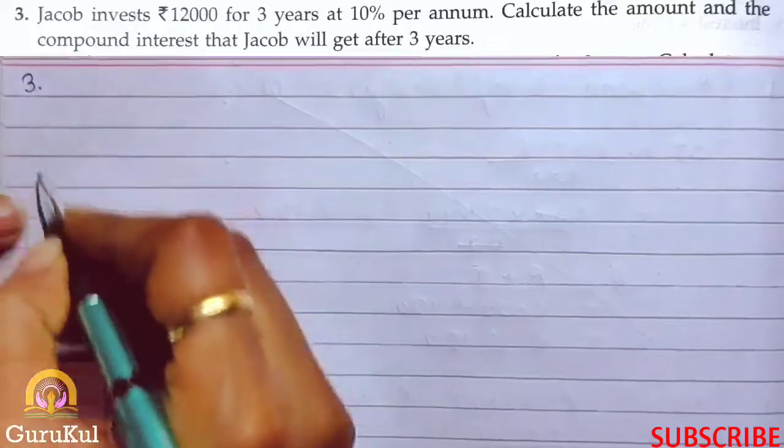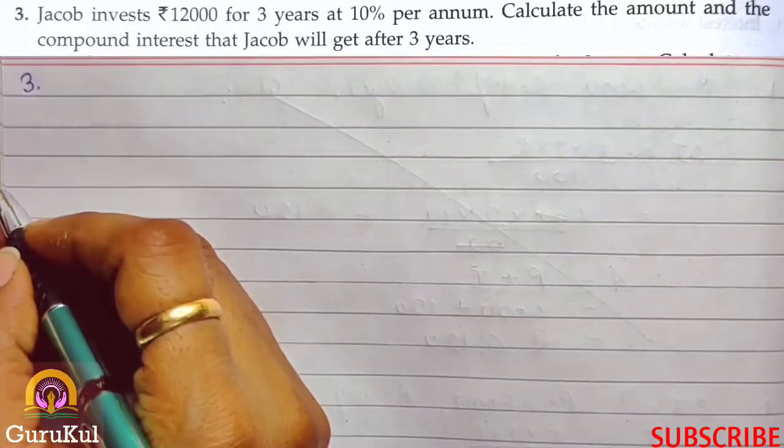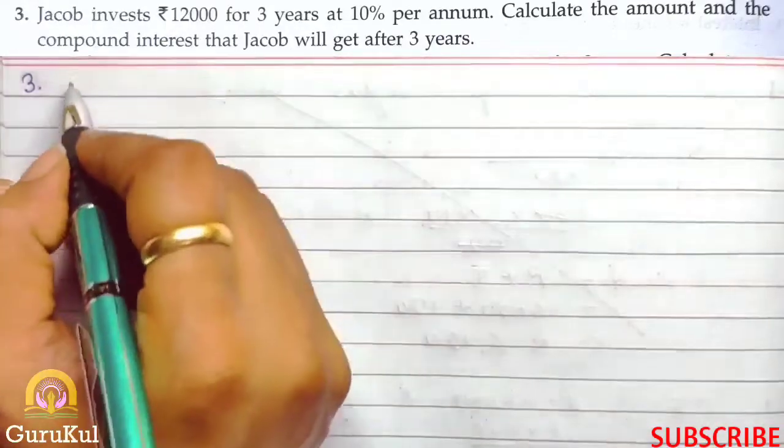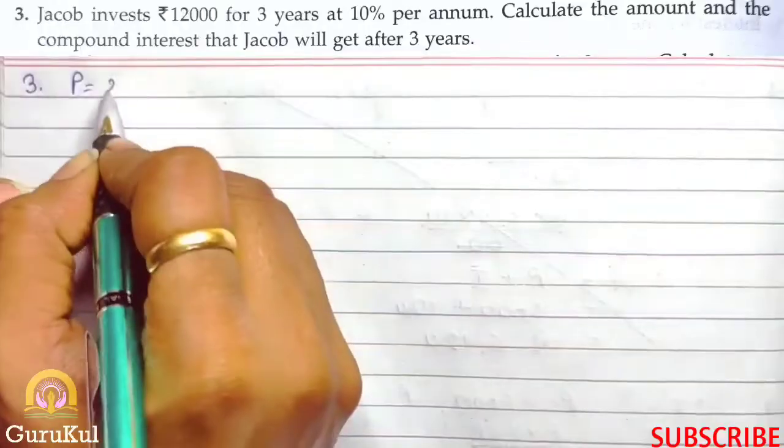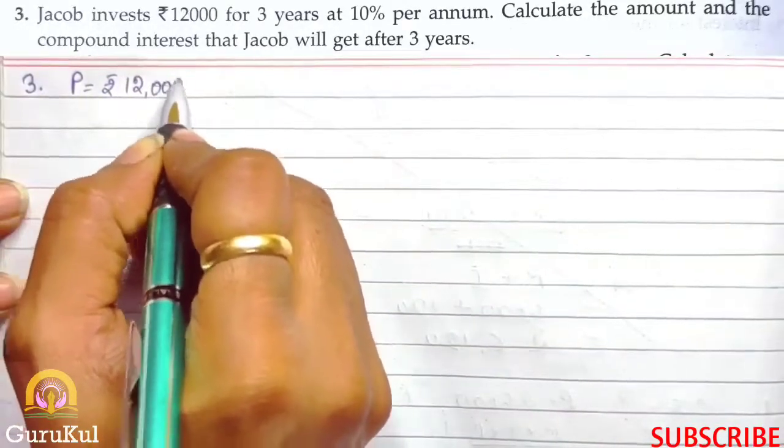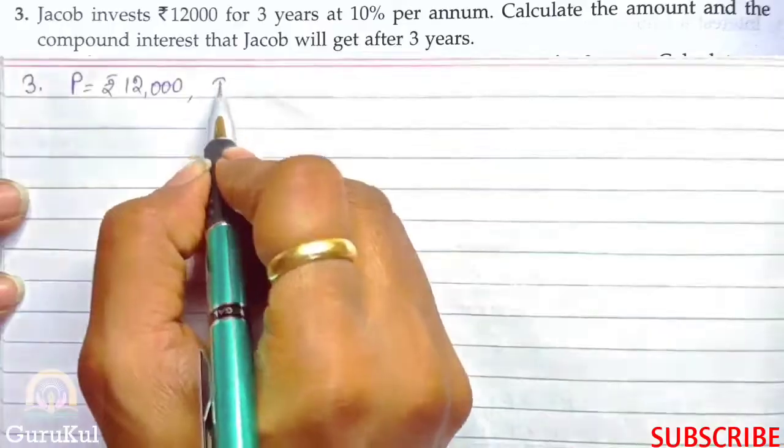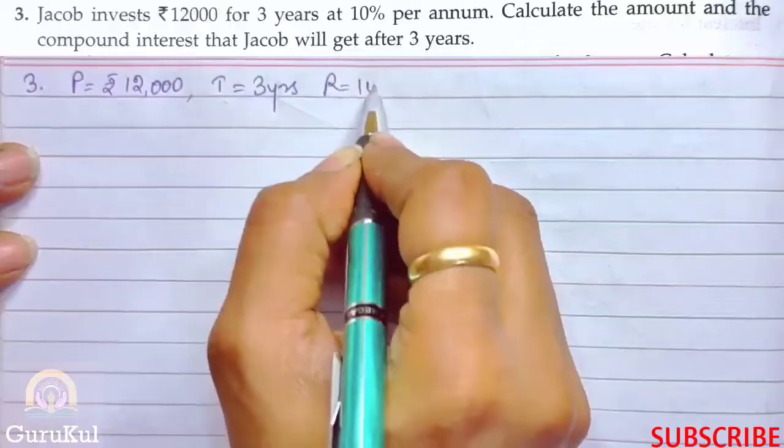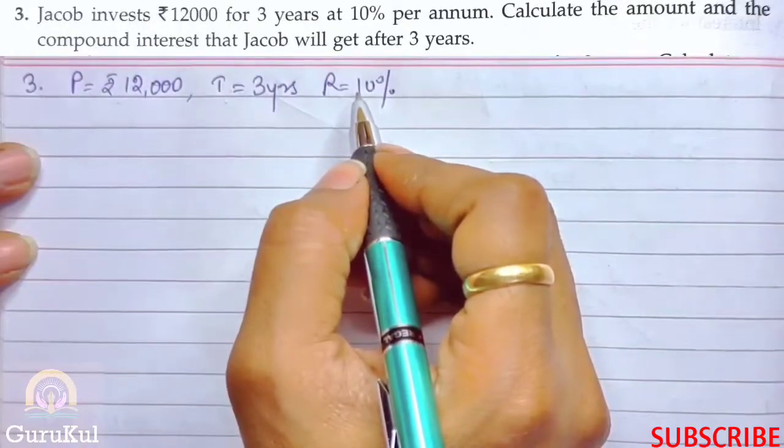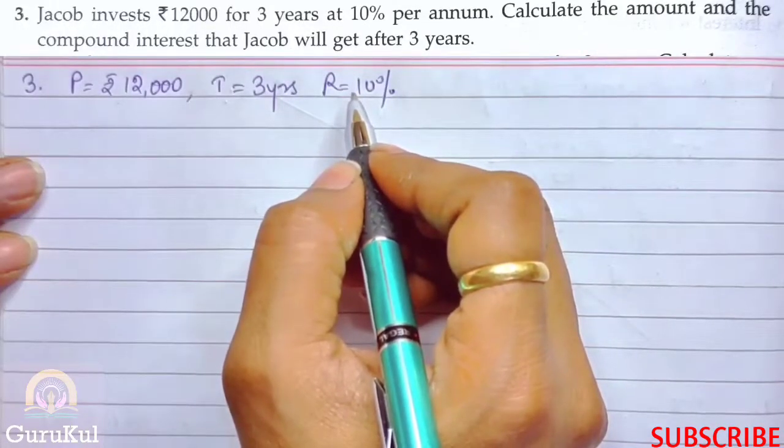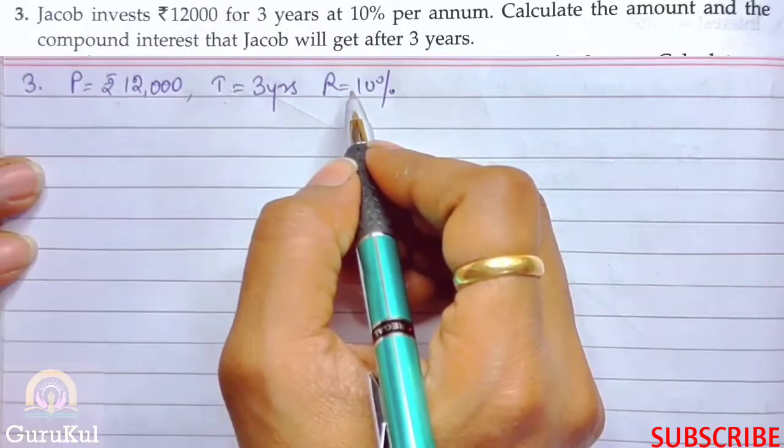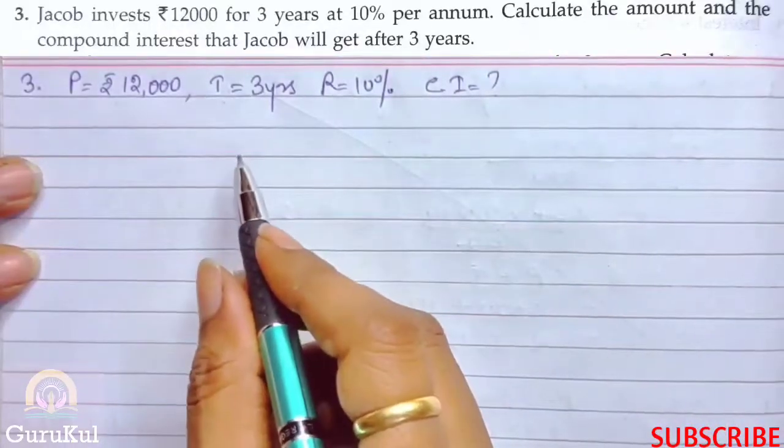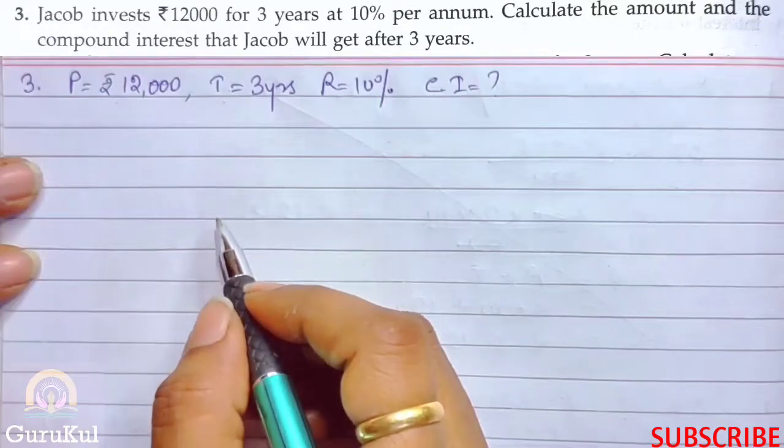Question number 3: Jacob invested ₹12,000 for 3 years at 10% per annum. So the principle is ₹12,000, time is 3 years, and rate is 10%. We need to calculate the amount and the compound interest that Jacob will get after 3 years. We have to calculate interest every year, that is annually.